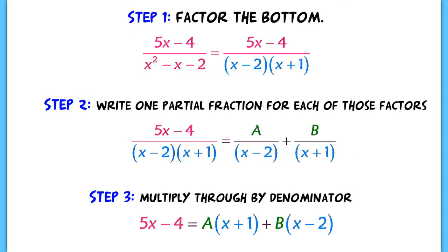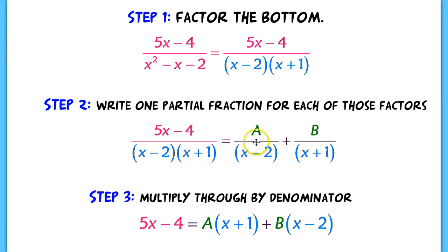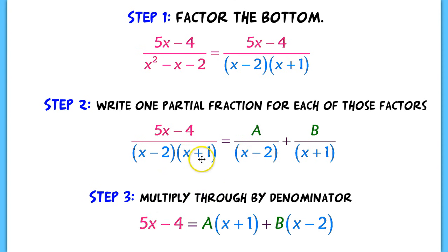Here's the basic gist of what you want to do. Your first step is always to factor the bottom. Now this is what I'm going to separate my two partial fractions into — each partial fraction has one of those factors in the denominator. Since I do not know what goes in the numerator, I'm going to place an A and a B to represent the numerators. These are constants. Then we multiply through by the denominator to get rid of it on the left side, leaving A times x plus 1 plus B times x minus 2.